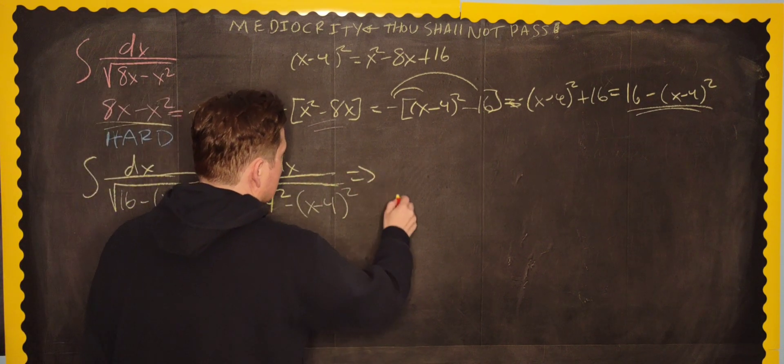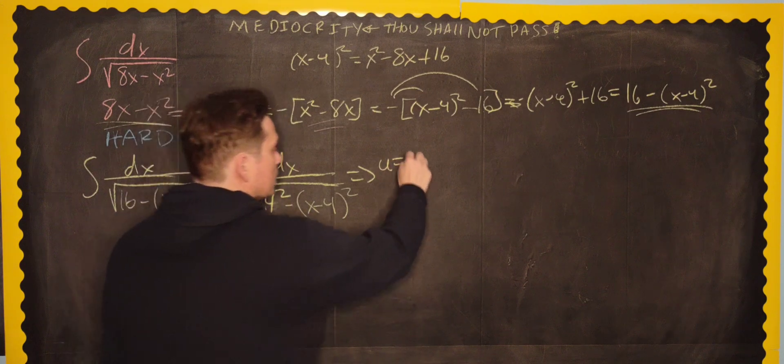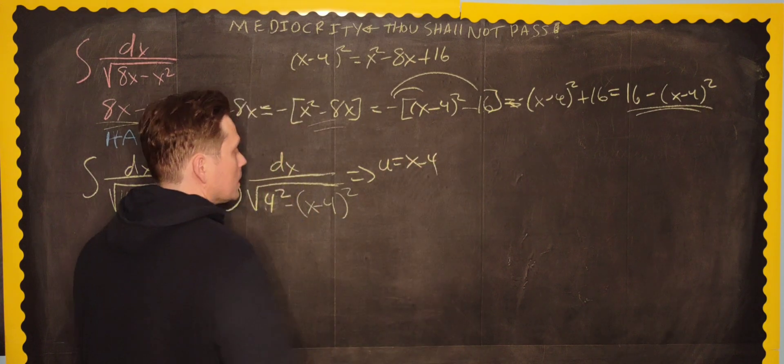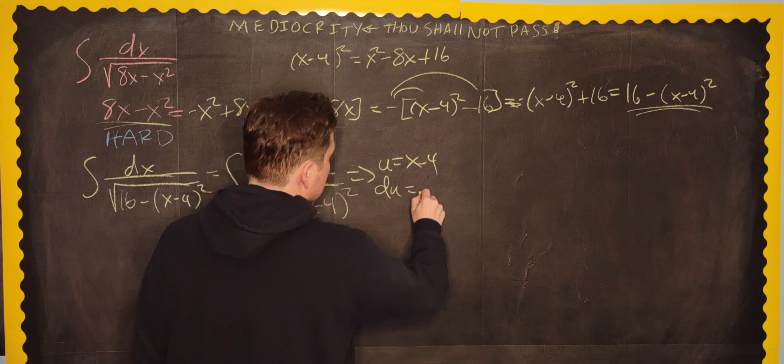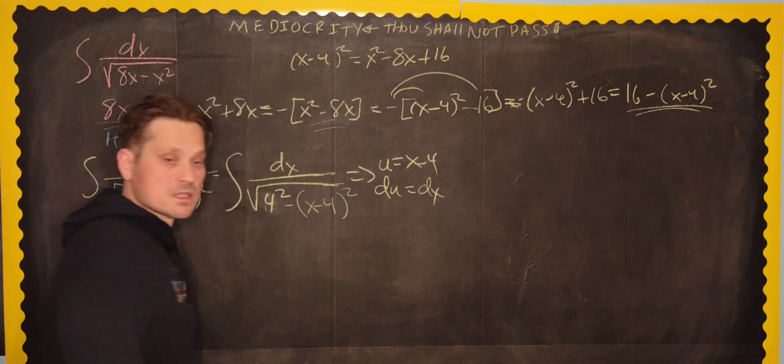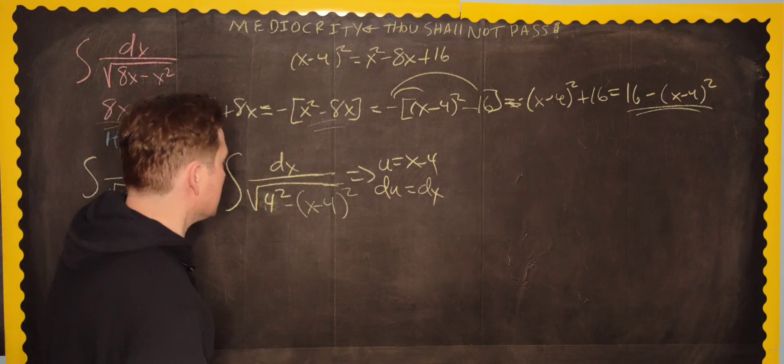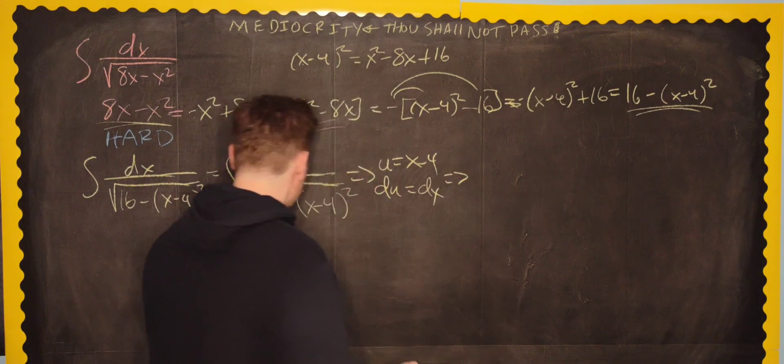Now here, we're going to set u equal to x minus 4, and then du would be equal to just dx. We're going to do a variable substitution, u sub, if you like. Good. So I'm going to pick up over here next.